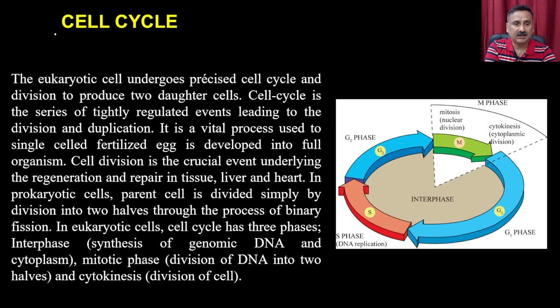Cell division in the eukaryotic cell is well planned and well organized as a sequence of events. These sequences of events are called cell cycles. Every eukaryotic cell goes through cell cycle stages before it can increase its number. The cell cycle has precise different phases: interphase, G1, S, G2, and M phases.